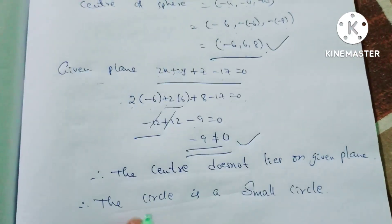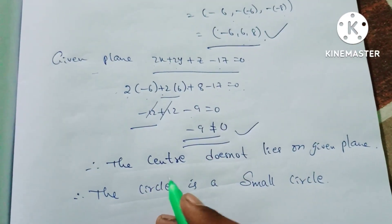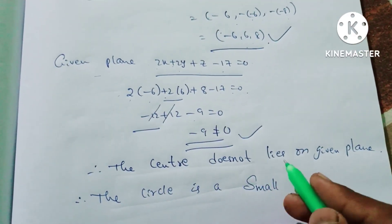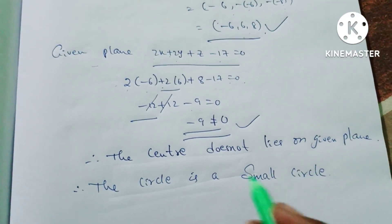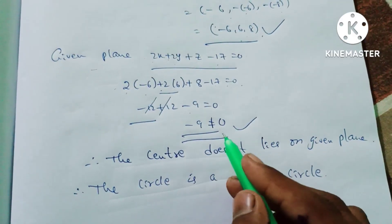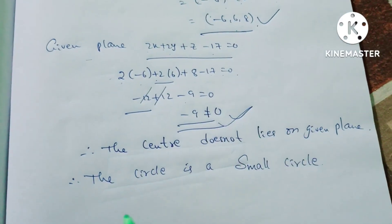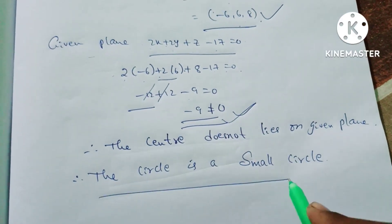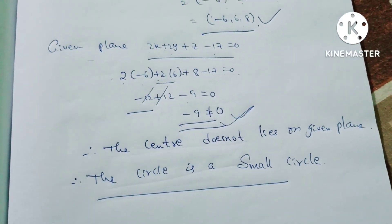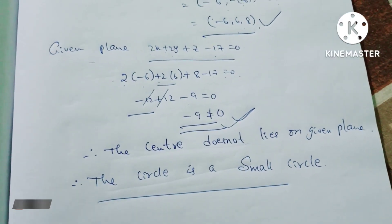Since the result is -9 and not equal to 0, the center does not lie on the given plane. Therefore, the circle is a small circle.